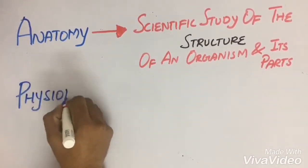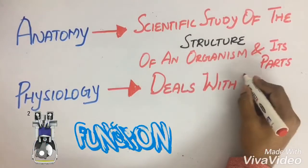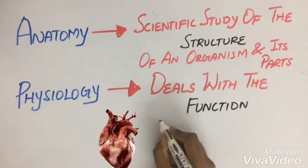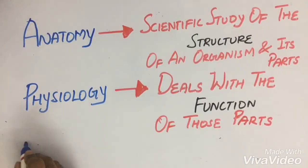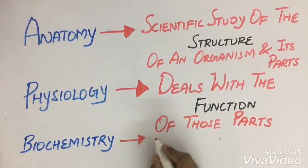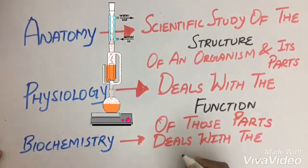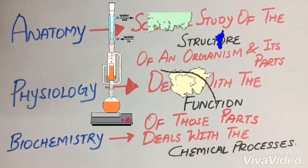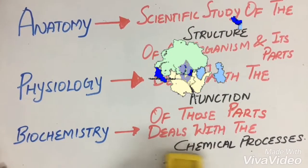Whenever we learn anatomy, it is important to learn about physiology too. Physiology deals with the function of those parts, for example the function of the heart and how it pumps. Biochemistry deals with the chemical processes or chemical reactions that take place within the cell, for example glucose metabolism, protein synthesis, lipid synthesis, and so on.